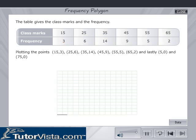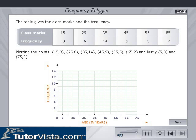In the graph below, x-axis represents the age group, while y-axis represents the frequency. Hence, the data in the table can be represented by the points: (15, 3), (25, 6), (35, 14),